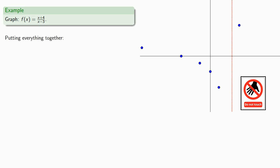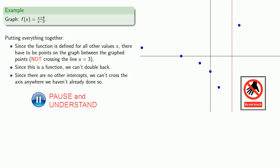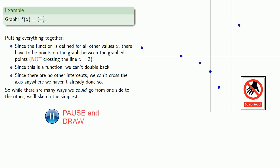So now let's put everything together. Since the function is defined for all other x values, there have to be points on the graph between the graphed points, not crossing this line x equals 3. Since this is a function, we can't double back. And remember, we already found all the x and y intercepts, so since there are no other intercepts, we can't cross the axis anywhere we haven't already done so. So while there are many ways we could go from one side to the other, we'll sketch the simplest. Wait, that can't be right because we're crossing the x-axis again, so we've got to adjust this line. And this gives us a preliminary sketch of what our graph looks like. Now later on, we'll learn more about what the graphs of functions look like, so our preliminary sketch will be refined into a better sketch later.